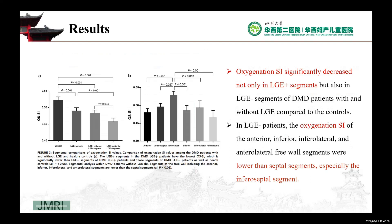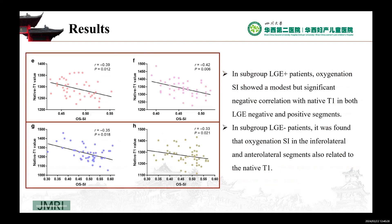In LGE-negative patients, the oxygenation SI of the anterior, inferior, anterior lateral, and anterior lateral free wall segments were lower than septal segments, especially the inferior septal segments. For all DMD patients, there were negative correlations between oxygenation SI and native T1 in LGE-negative segments. In subgroup LGE-positive patients, oxygenation SI showed a modest but significant negative correlation with native T1 in both LGE-negative and LGE-positive segments. In subgroup LGE-negative patients, oxygenation SI in the free wall, especially the inferior lateral and anterior lateral segments, also correlated with native T1.